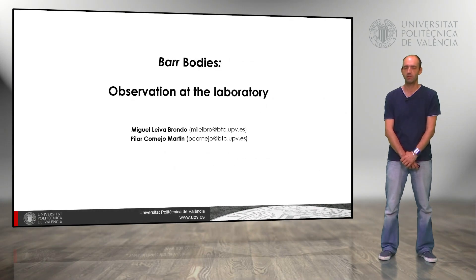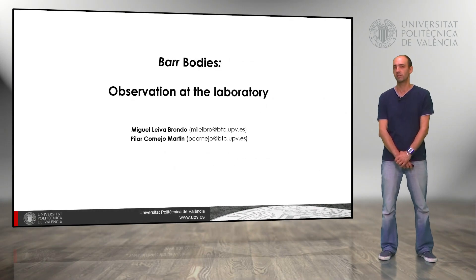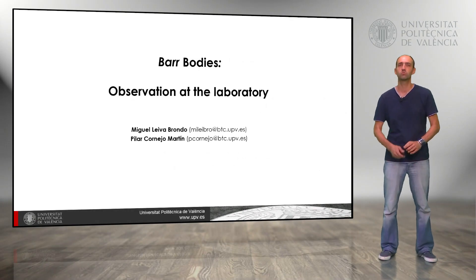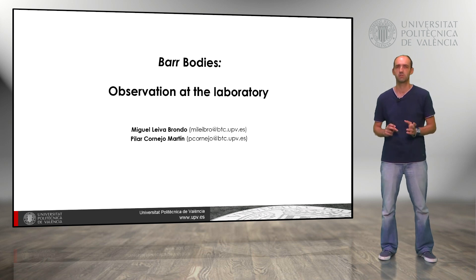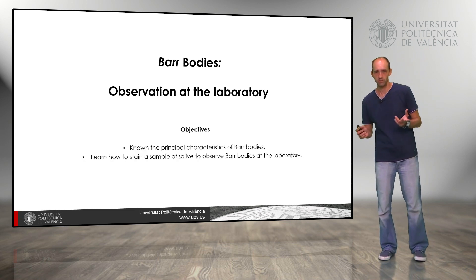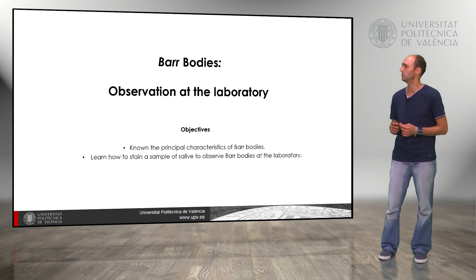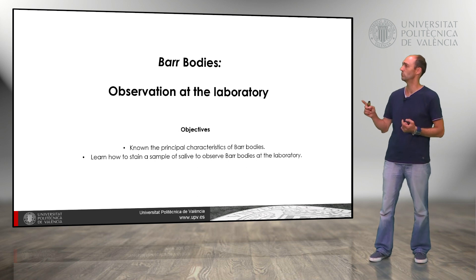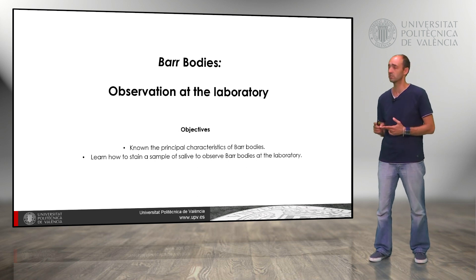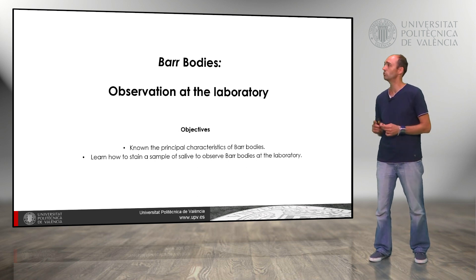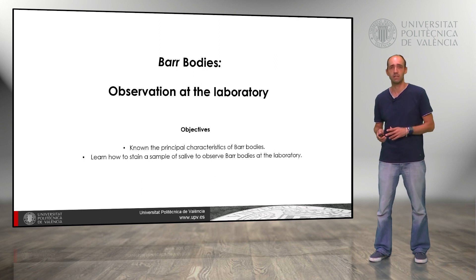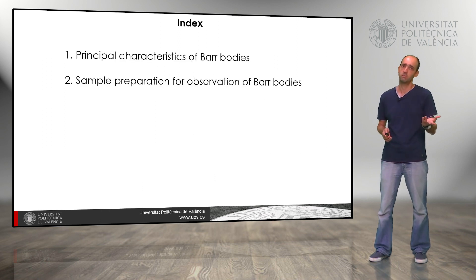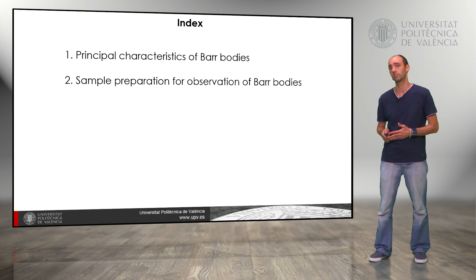Hello, my name is Miguel Leyva and with the help of Pilar Cornejo we are going to explain this learning object called bar bodies observation at the laboratory. The objective is to know the principal characteristics of the bar bodies and to learn how to stain a sample of saliva to observe the bar bodies at the laboratory. We are going to see the principal characteristics and how to prepare the sample.